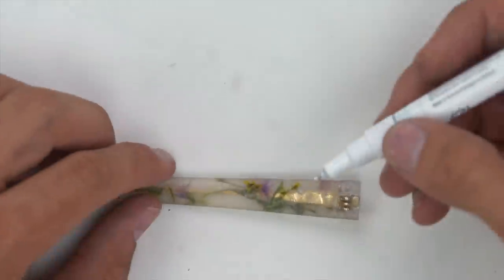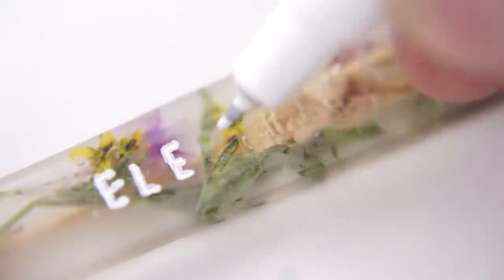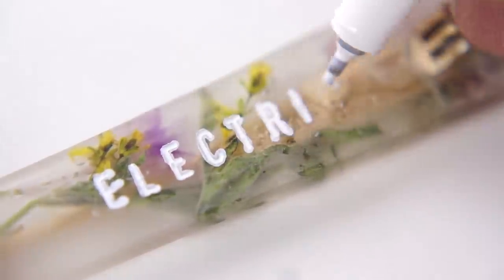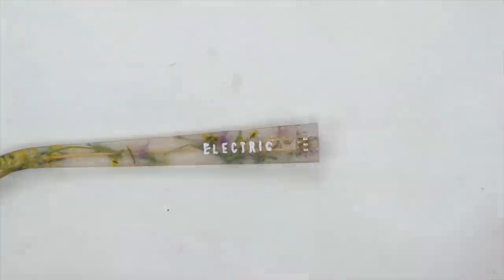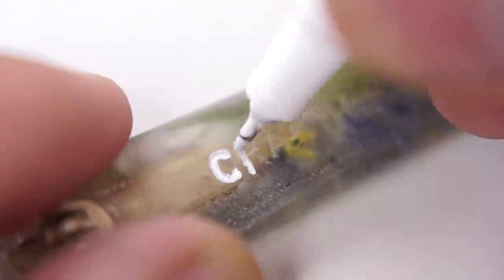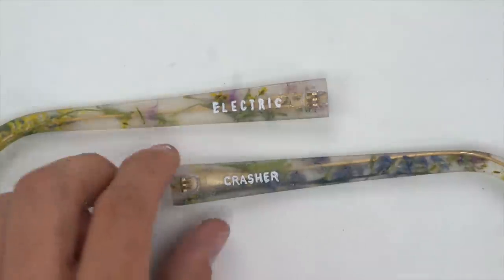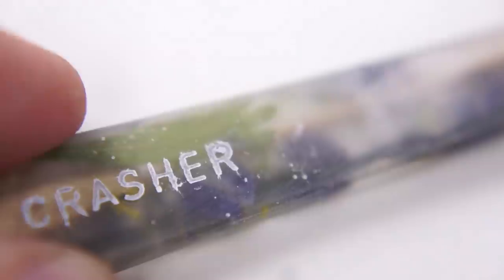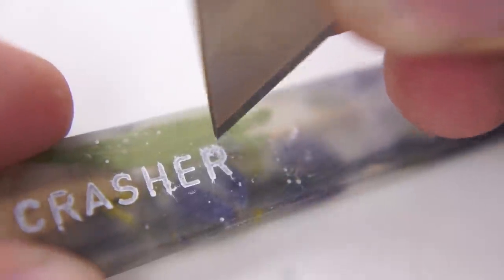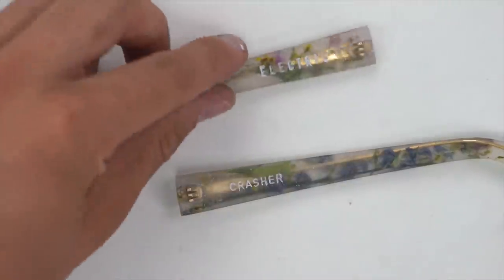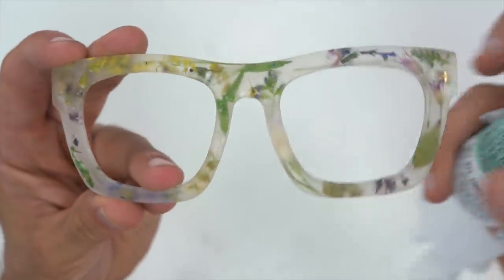For the little text detail, I took a paint marker and filled that little engraving of the text. I wasn't too worried about overflowing because we're gonna let it dry and sand it off. Once it was dry, came in with some sandpaper, shaved it down, came in with the razor to get the details.